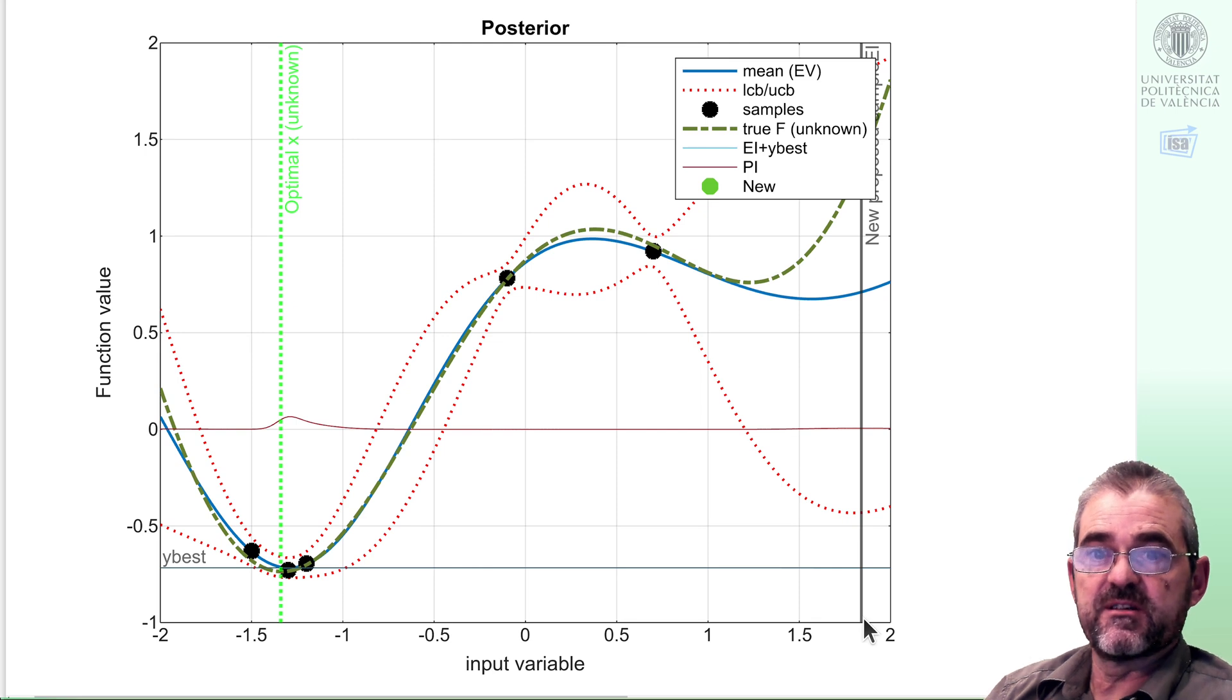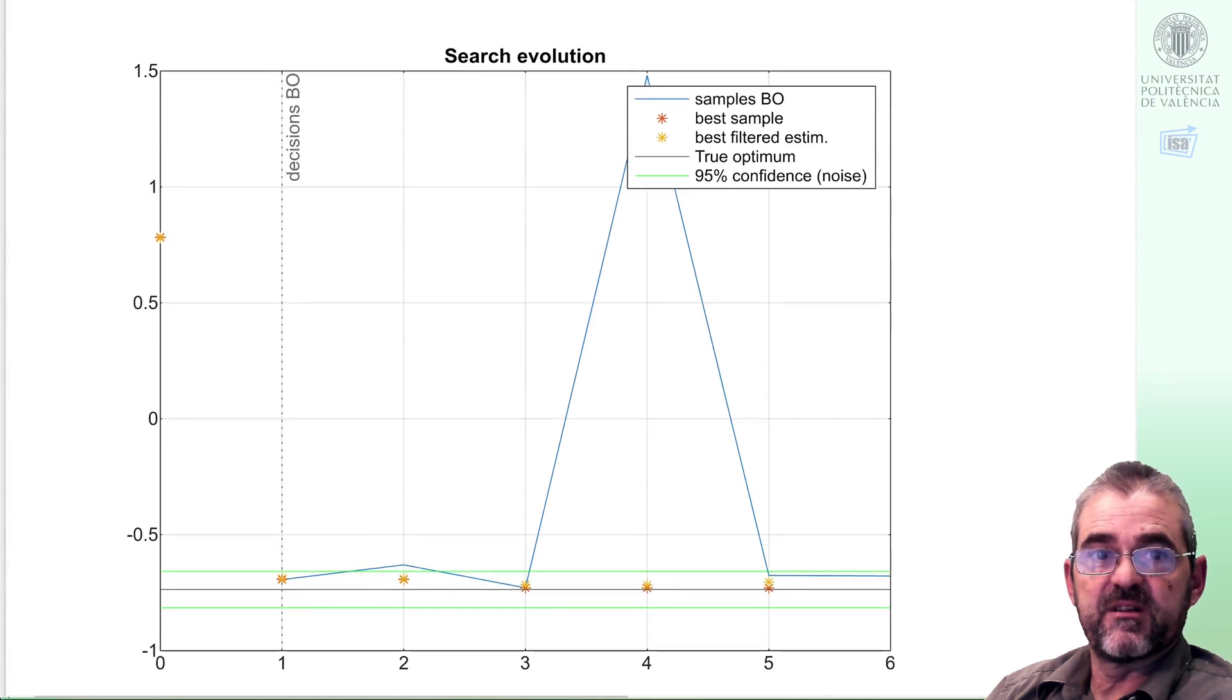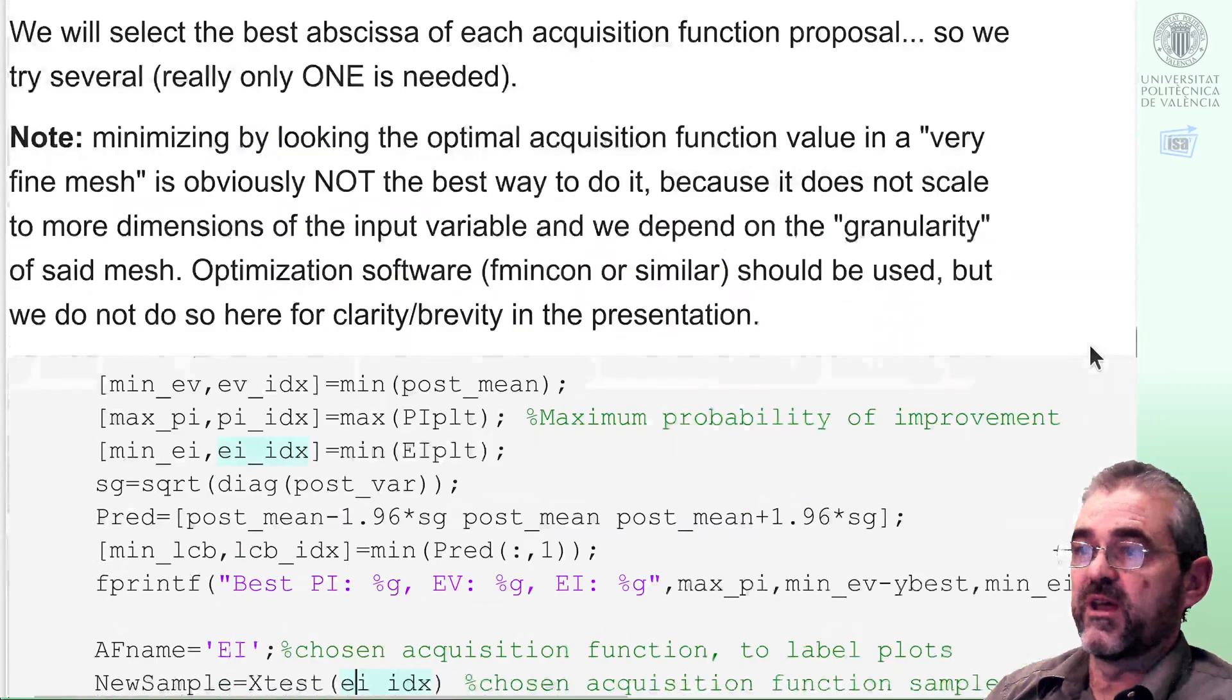But this kind of anomalous behavior can happen with probability of improvement or expected improvement. We'll leave the discussion for the next video in the series. In here we end up finding the optimum even if we have one strange sample there.